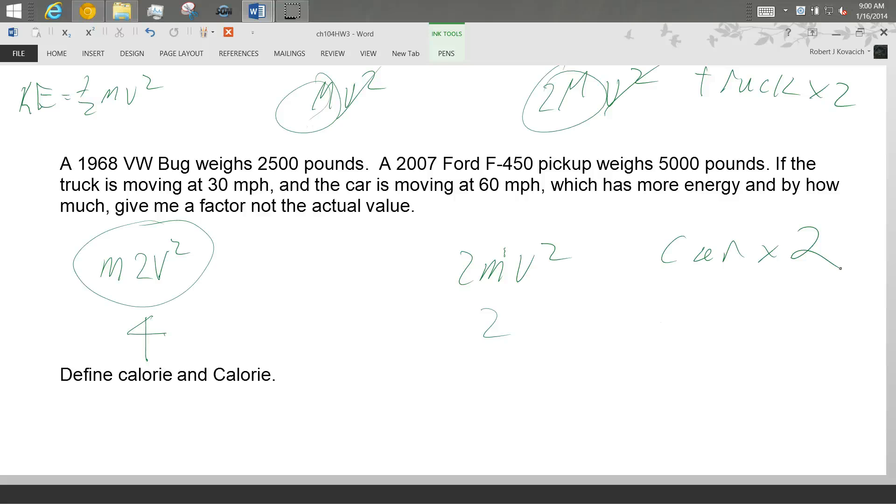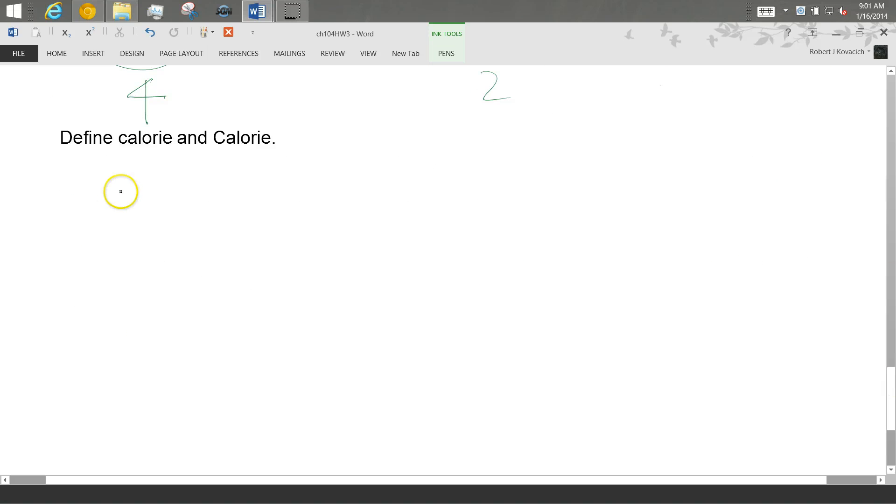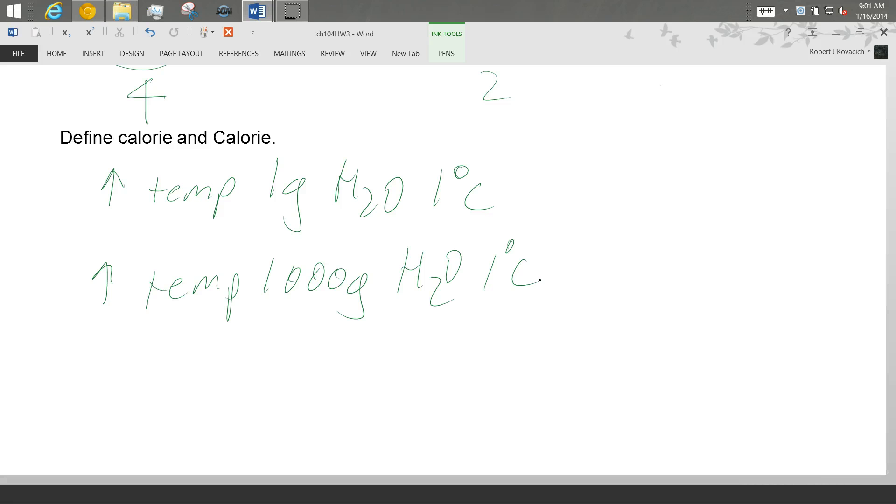How about that last definition, those two definitions for calorie and Calorie? Small c calorie is, or 1,000 small c calories equals to 1 big one. For the little calorie, you increase the temperature of 1 gram of H2O, 1 degree Celsius. For the big one, you increase the temperature of 1,000 grams of water, 1 degree Celsius. So that capital C is telling you kilocalories. Okay. So let's go.